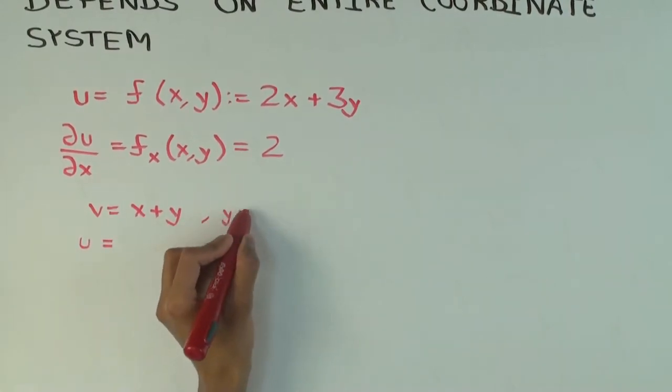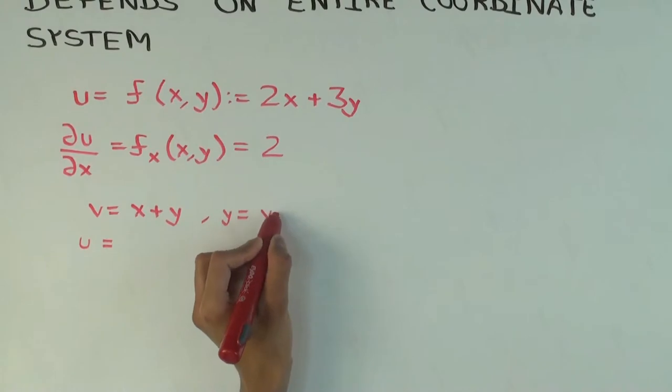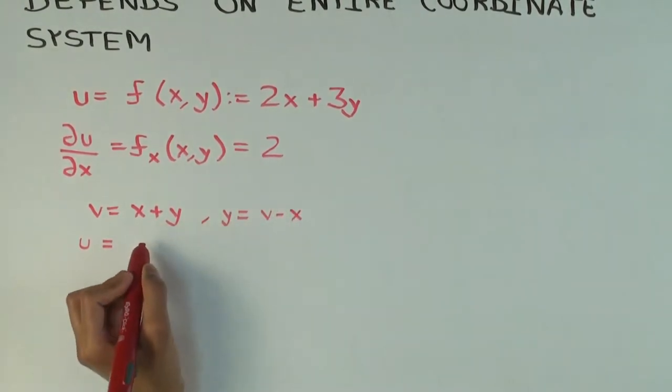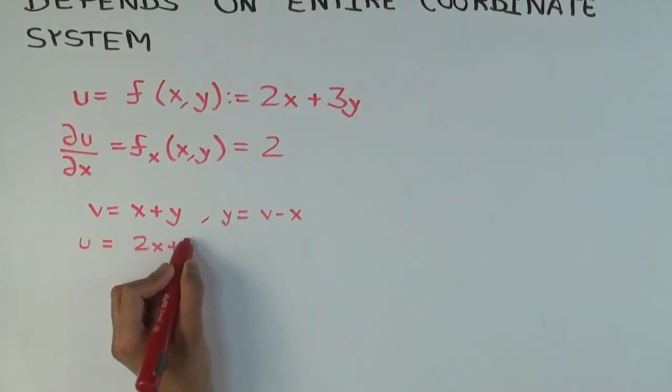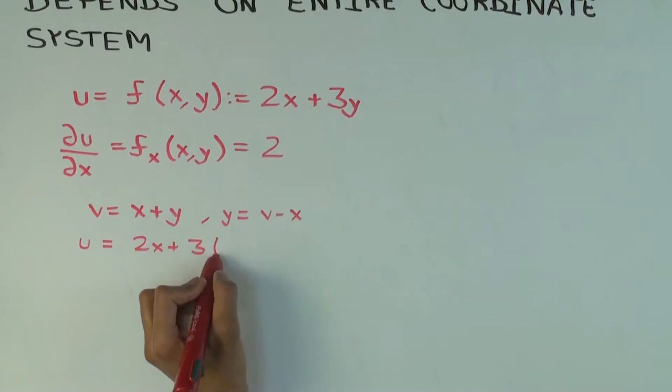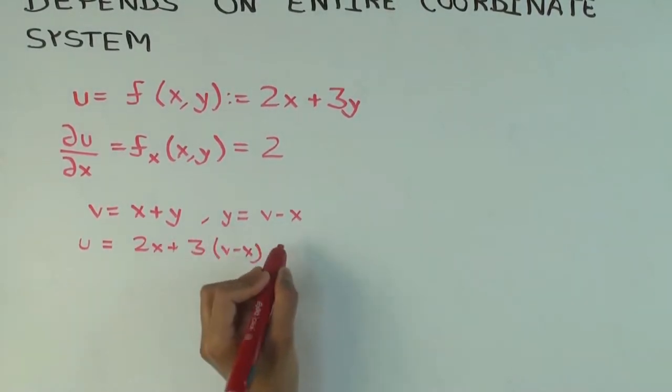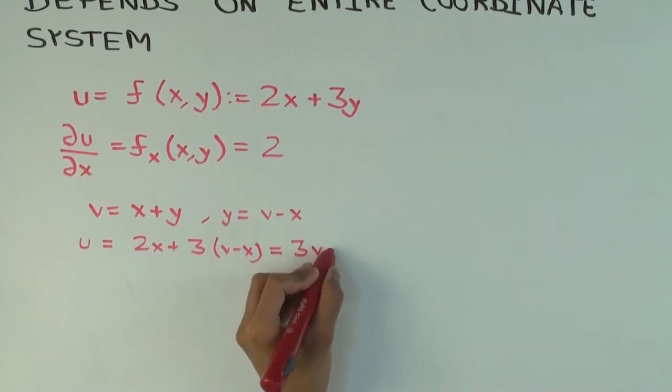Now in order to do that, I first write y in terms of x and v. So what's y? V minus x. So what's u in terms of x and v? So it's 2x plus 3, plug in y as v minus x. And now simplify so that becomes 3v minus x.